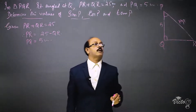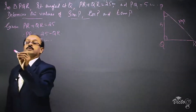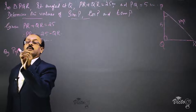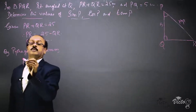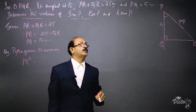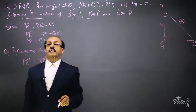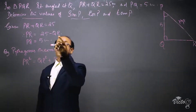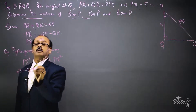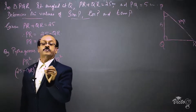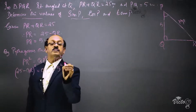We are using the Pythagorean theorem. Pythagoras theorem says hypotenuse squared equals base squared plus altitude squared, so PR squared is equal to QR squared plus PQ squared. Instead of PR, we can write 25 minus QR. Therefore PR squared becomes (25 minus QR) whole squared equals QR squared plus PQ squared, and the value of PQ is 5, so it is 5 squared.